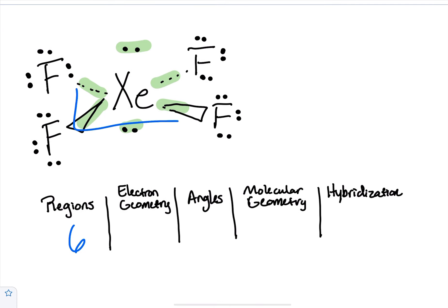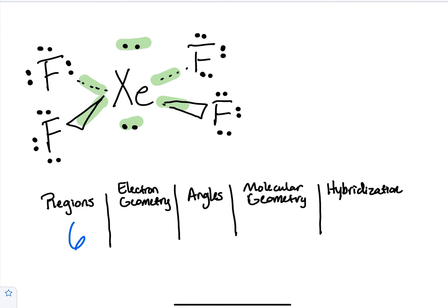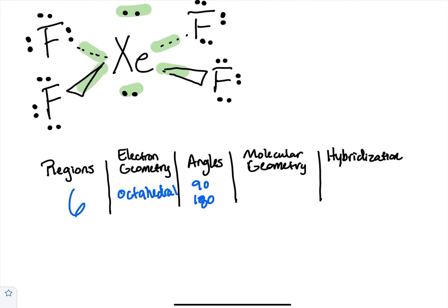And then again I know you see the square but with those lone pairs it's still considered the electron geometry to be an octahedral, bond angles 90 and 180. There's no 120 because the 120s only come with the triangle shapes.